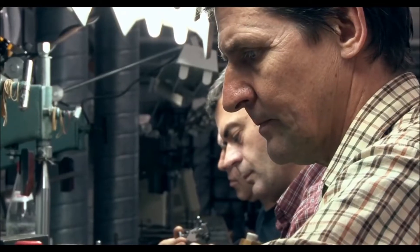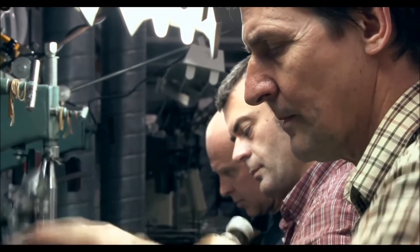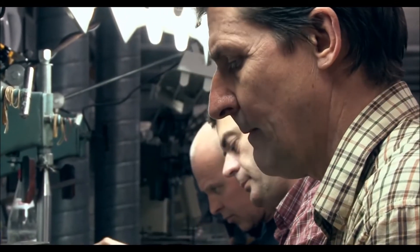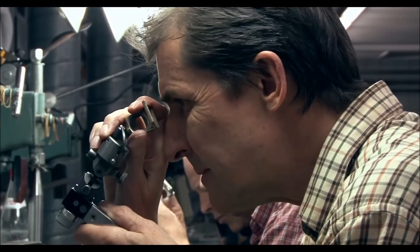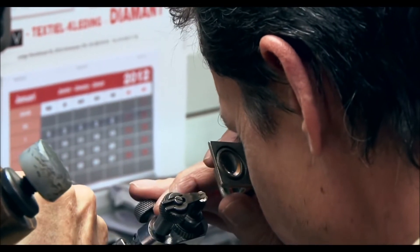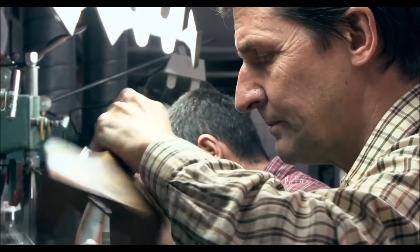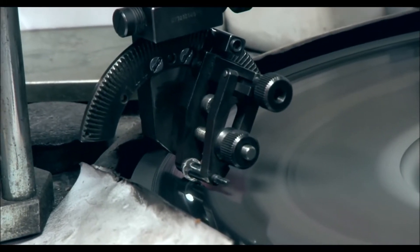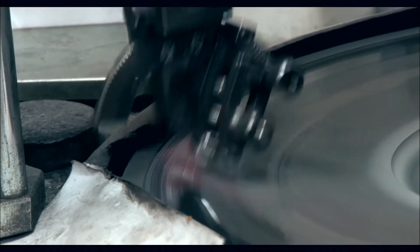During this process, the diamond is secured in a special bracket which holds the diamond at an exact angle. It's lowered onto a turntable which is covered in a diamond paste that slowly polishes away the material from the rough diamond.